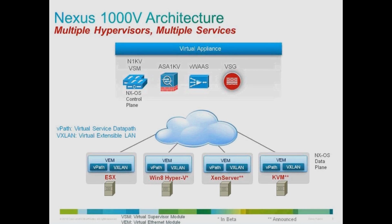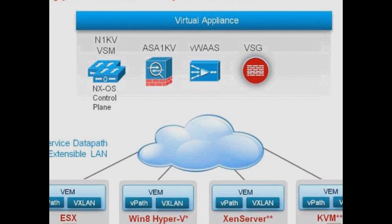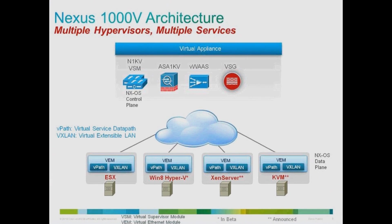It is the first switch to support virtual services integration through vPath and support for vXLAN network overlay. Virtual services support includes VSG for zone-based firewall, ASA 1000v for tenant-edge firewall, virtual WAS for WAN optimization, and NAM on 1010 for visibility and monitoring. Nexus 1000v fully supports the latest vSphere 5.1 release, and the upcoming Nexus 1000v release 2.1 will support vCloud Director 5.1 as well.